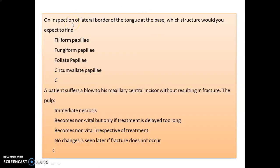If you inspect the lateral border of the tongue at the base, which structure would you expect to find? That is your foliate type of papillae. Now, if a patient suffers a blow to his maxillary central incisor without resulting in fracture, what happens to the pulp? The pulp becomes non-vital.